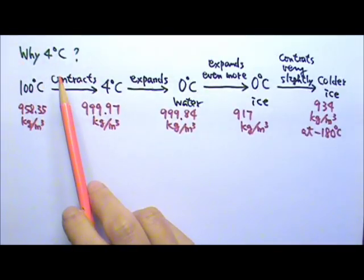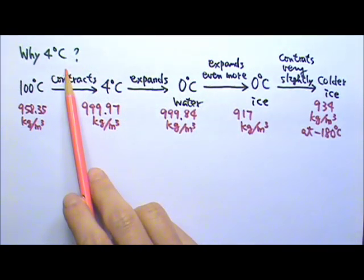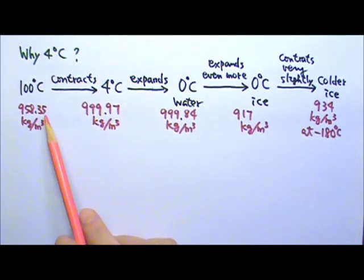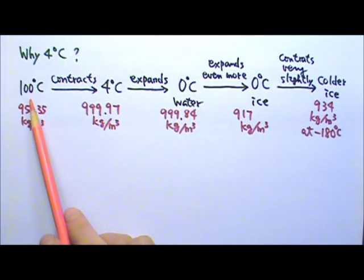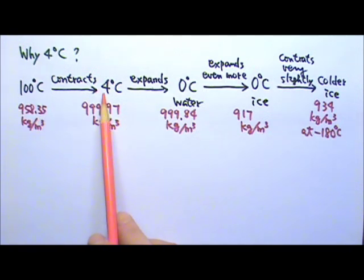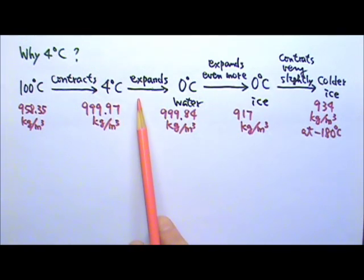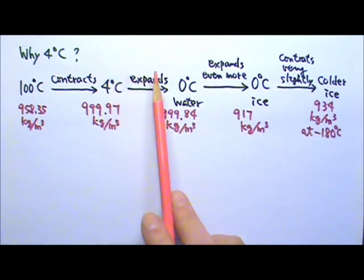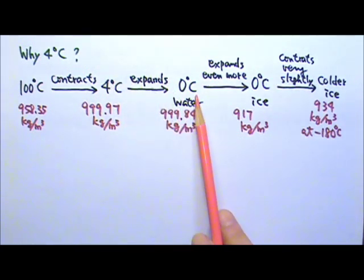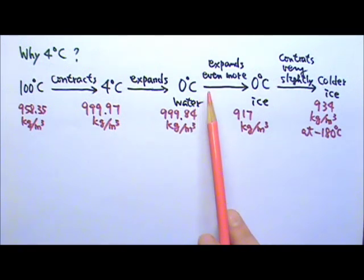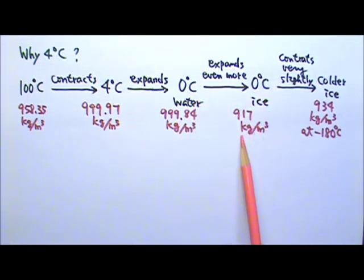Why 4 degrees Celsius? 4 degrees Celsius is special because that is when water is the densest. Normal substance expands when the temperature goes up and contracts when the temperature goes down. However, water behaves anomalously below 4 degrees Celsius. When we cool water from, say, 100 degrees Celsius, water would contract and become denser until it cools down to 4 degrees Celsius. When water gets colder than 4 degrees Celsius, it actually expands as it gets colder to 0 degrees Celsius, and expands even more when it freezes into ice.